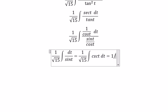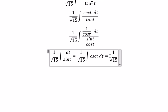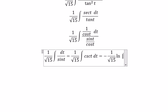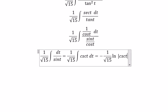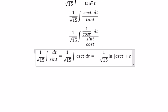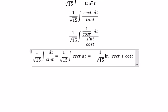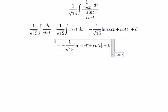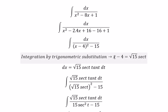We have 1 over the square root of 15, and we get negative ln of the absolute value of cosecant t plus cotangent t. For t, we need to change back to x.